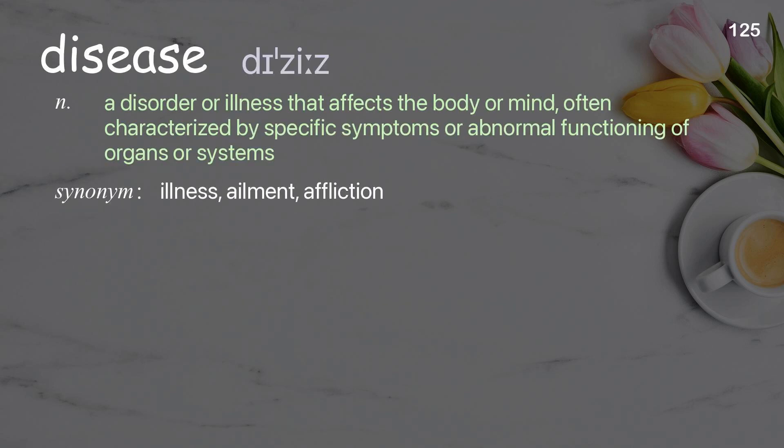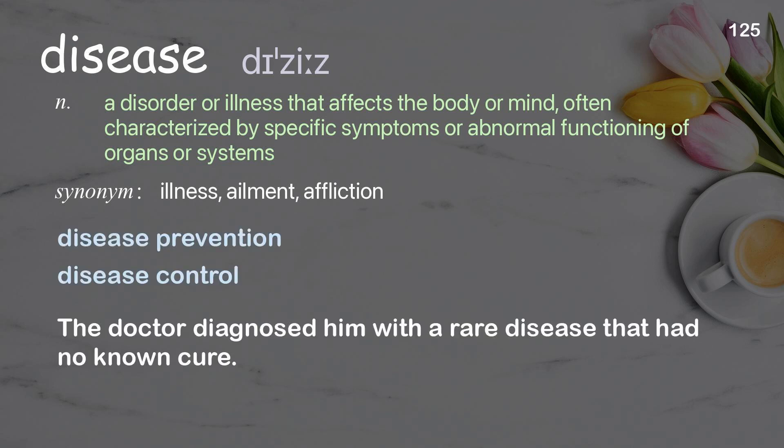Disease: a disorder or illness that affects the body or mind, often characterized by specific symptoms or abnormal functioning of organs or systems. Examples: disease prevention, disease control. The doctor diagnosed him with a rare disease that had no known cure.